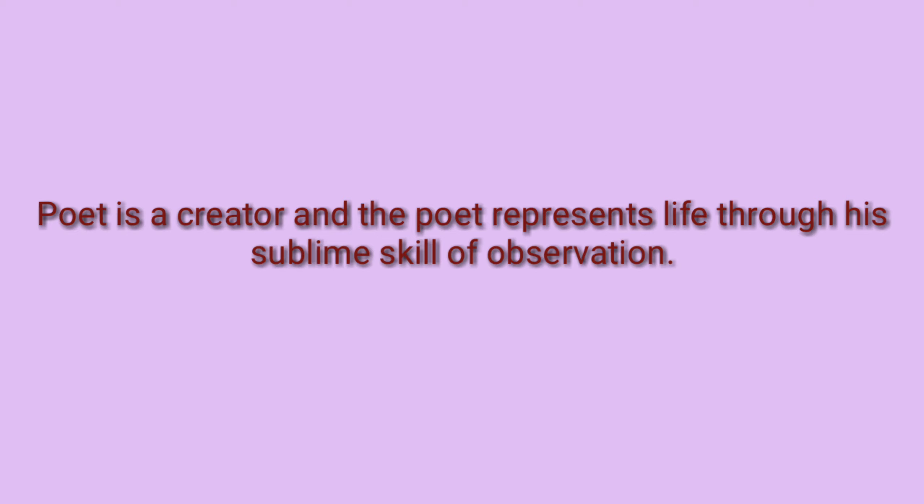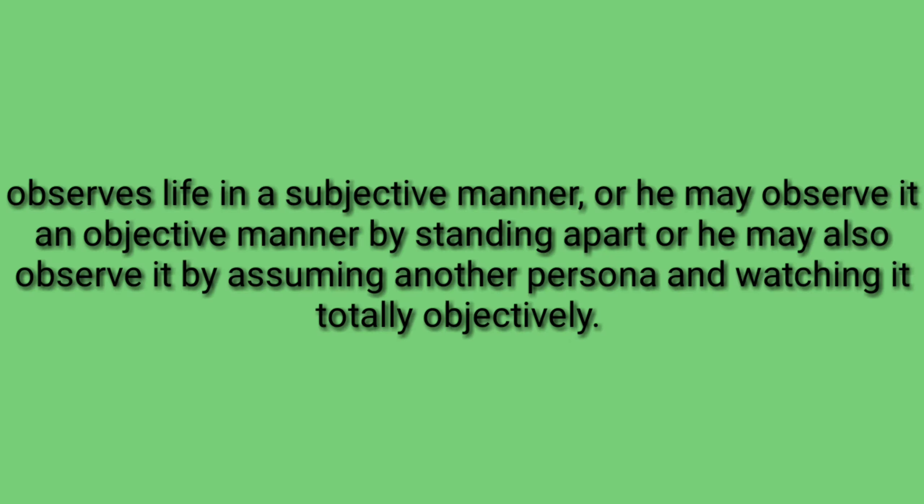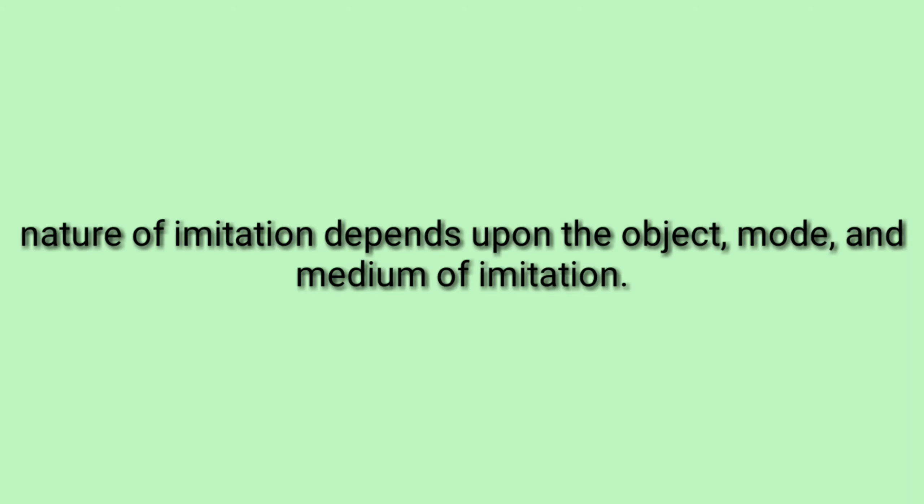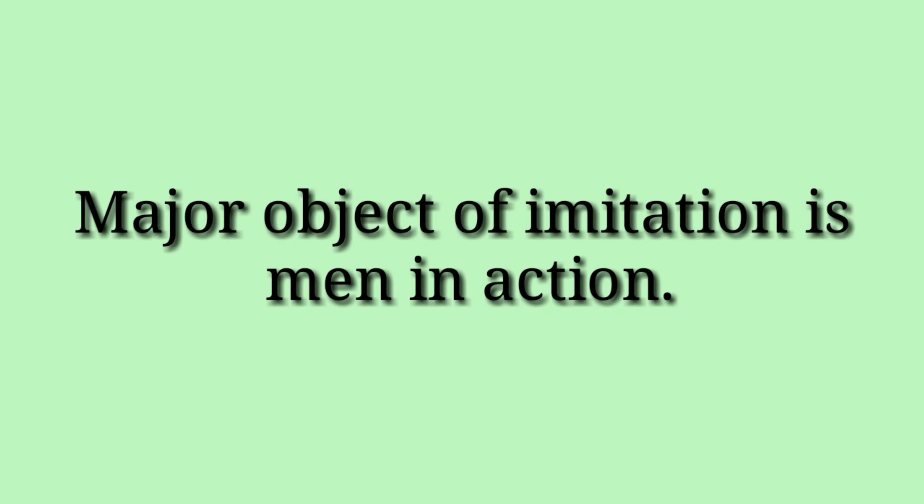In Aristotle's view, life can be duplicated or imitated — the action of mimesis can take place through imitation. Poetry attempts to imitate life through rhythm, language, and harmony. For him, the poet is a creator who represents life through his sublime skill of observation. A poet observes life as a first person in a subjective way, or as a third person in an objective way, or takes another personality and watches events as an observer. The nature of imitation depends upon the object, mode, and medium of imitation. The major object of imitation is men in action. Art imitates life by presenting men as better than they are with sublime qualities, as true to life as they are, or as worse than they are with low morals. It is the real skill of the poet to represent men differently from what they are while remaining true to life.